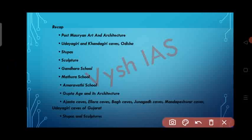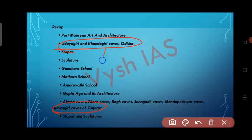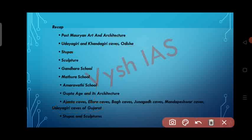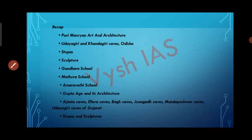Don't be confused with the Udayagiri Cave of Gujarat and Udayagiri Cave of Odisha — these two caves are entirely different from each other. The Udayagiri Cave of Odisha belonged to the Post-Maurian Period, whereas the Udayagiri Cave of Gujarat belonged to the Gupta Age.